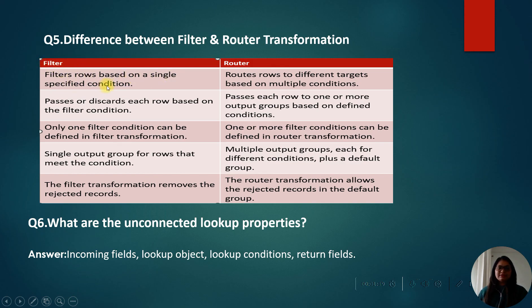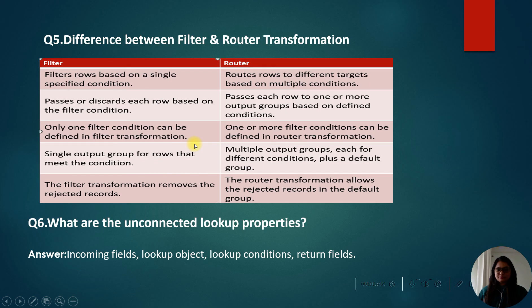Next question: difference between filter and router transformation. Filter transformation filters rows based on a single specified condition, while router routes rows to different targets based on multiple conditions. Filter transformation passes or discards each row based on the filter condition, but router passes each row to one or more output groups based on defined conditions. In filter, only one filter condition can be defined.